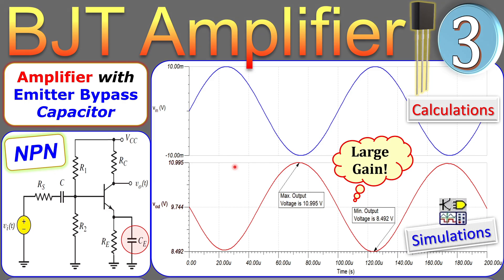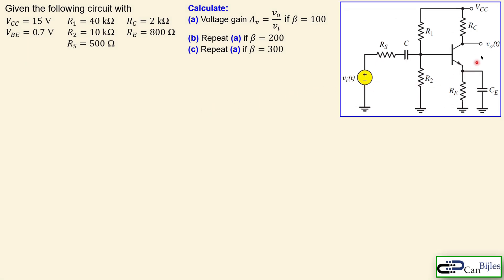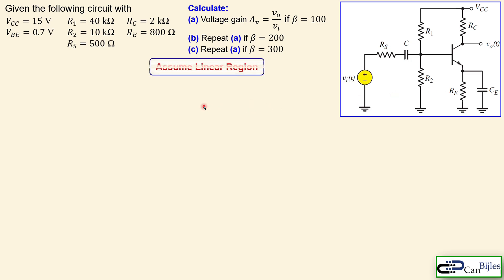We will look at our calculations step by step and also verify these in our SPICE simulations. We have again a similar circuit as in example number two. We have the capacitor CE which is the emitter capacitor or the bypass capacitor. We have again the same values exactly as in example number two — the DC volt source, VBE for our transistor, and the resistors R1, R2, RS, RC, and RE.